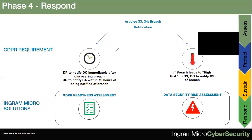GDPR has very stringent rules on breach notifications. If you as an organization suffer a data security breach, you have just 72 hours — about three days — within which you must notify the supervisory authority of the breach. Within three days you need to verify the breach and have a good understanding of the level of impact, so this update can go to the supervisory authority. For data processors who suffer a breach, GDPR does not specify a finite timeline but states they must notify the data controller immediately upon discovering and verifying the breach.